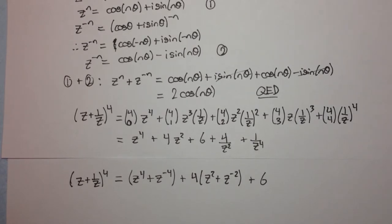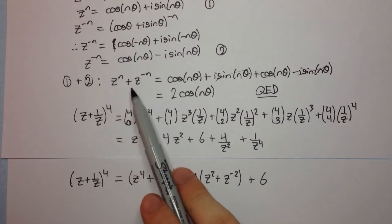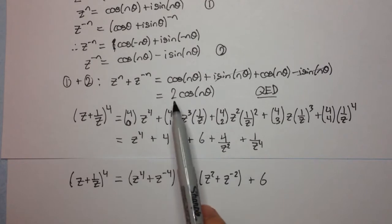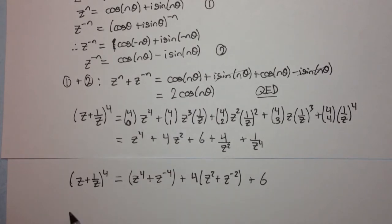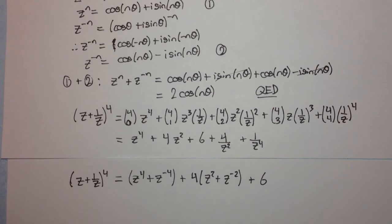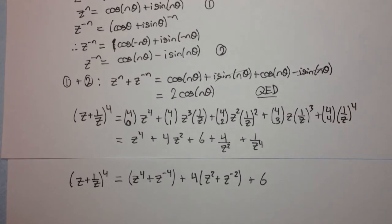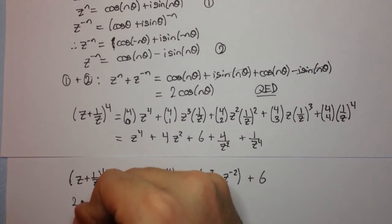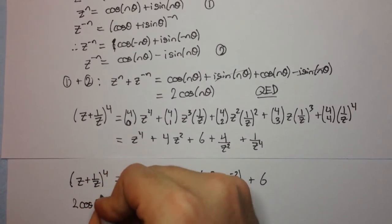Now we apply the formula we proved: z^n + z^(-n) = 2cos(nθ). If we apply this with n = 1, then z + 1/z = 2cosθ, so the left side becomes (2cosθ)^4. Applying the formula with n = 4 gives 2cos(4θ), and with n = 2 gives 2cos(2θ).